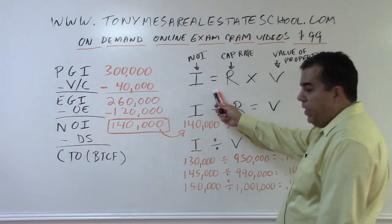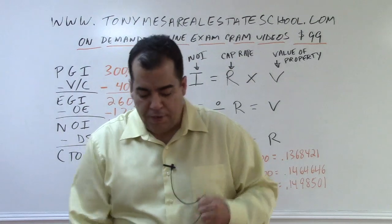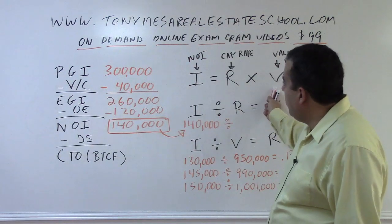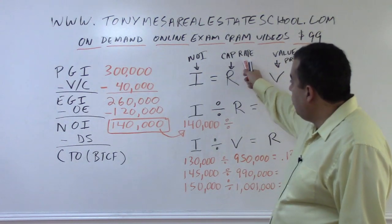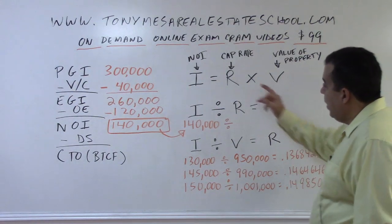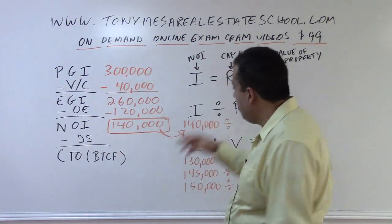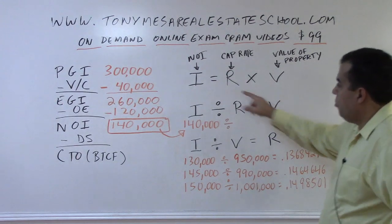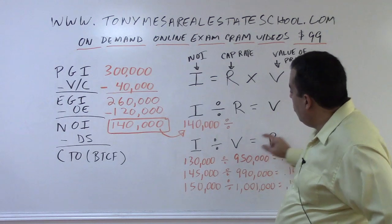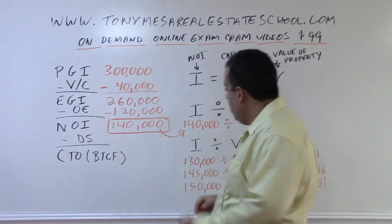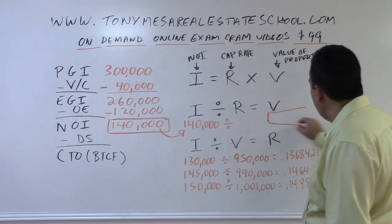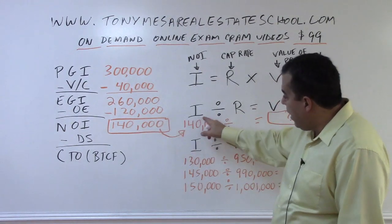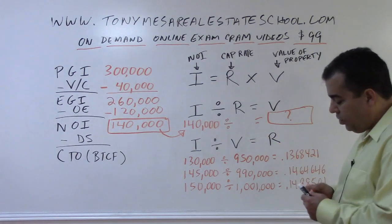Now, IRV — there's IRV the banker and IRV the appraiser. Two IRVs; they're cousins, they look the same, but the letters mean different things. Here, I = R × V, where I stands for net operating income, R stands for the capitalization rate, and V stands for the value of the property. Since R × V = I, that means I (the NOI) divided by R (the cap rate) equals V (the value). It also means NOI divided by value equals the capitalization rate. We're trying to estimate value — that unknown number. We know the NOI from the actual property being appraised is $140,000, and we divide that by a capitalization rate to get an estimate of value.